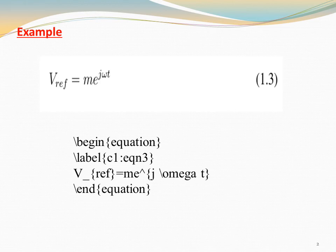Now start with \begin{equation} and label the equation with c1:eqn3. The equation is labeled in chapter 1, equation number 3, so 1.3. Then we start with the equation.